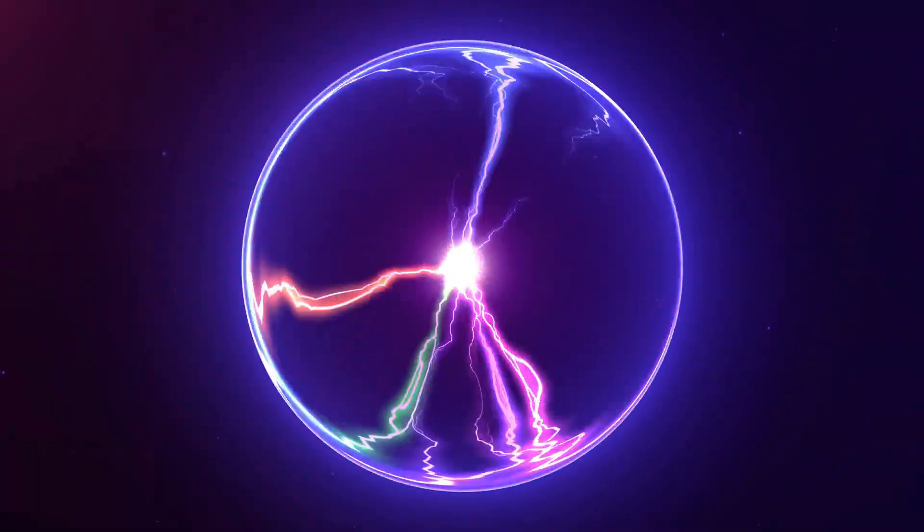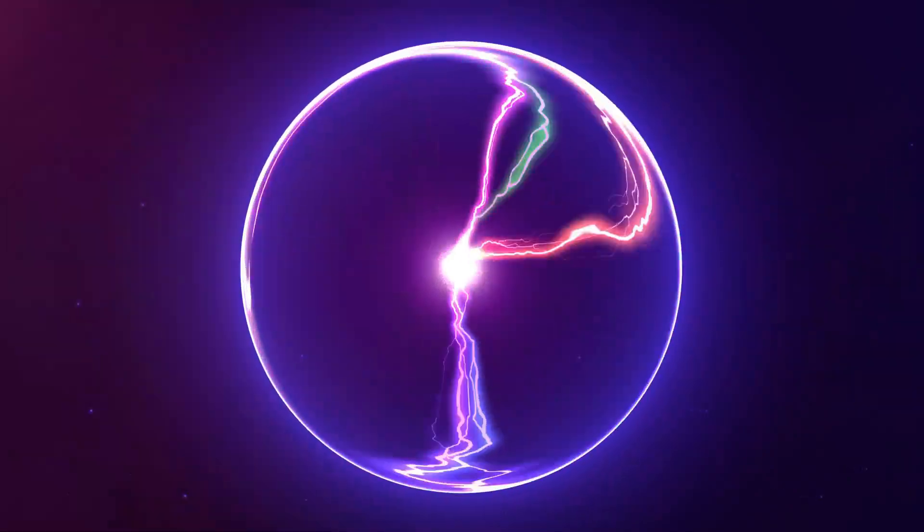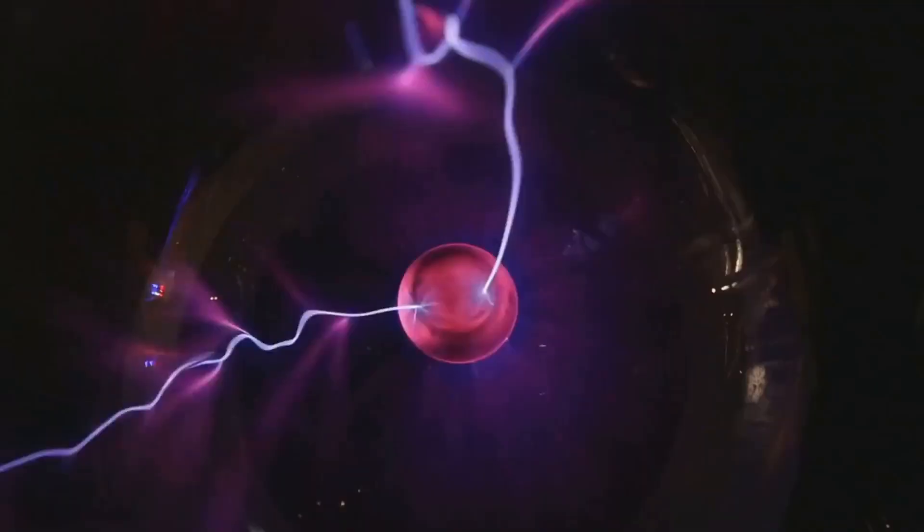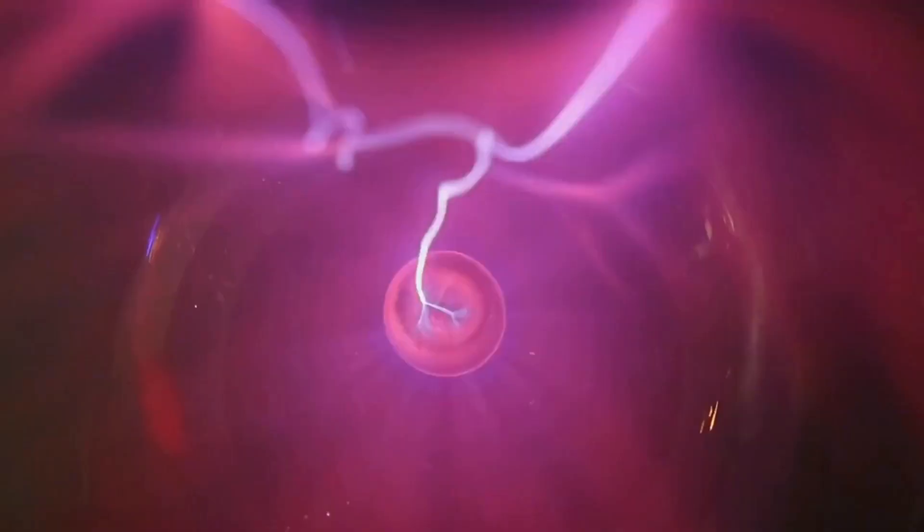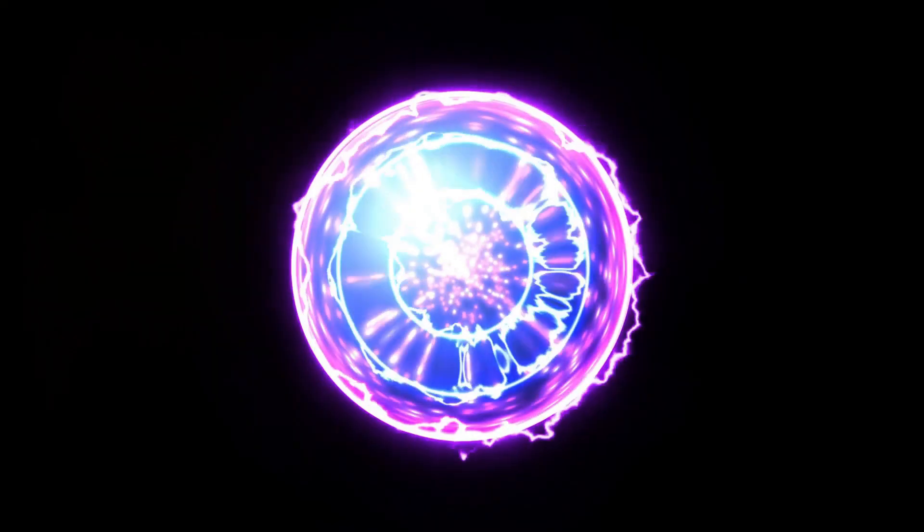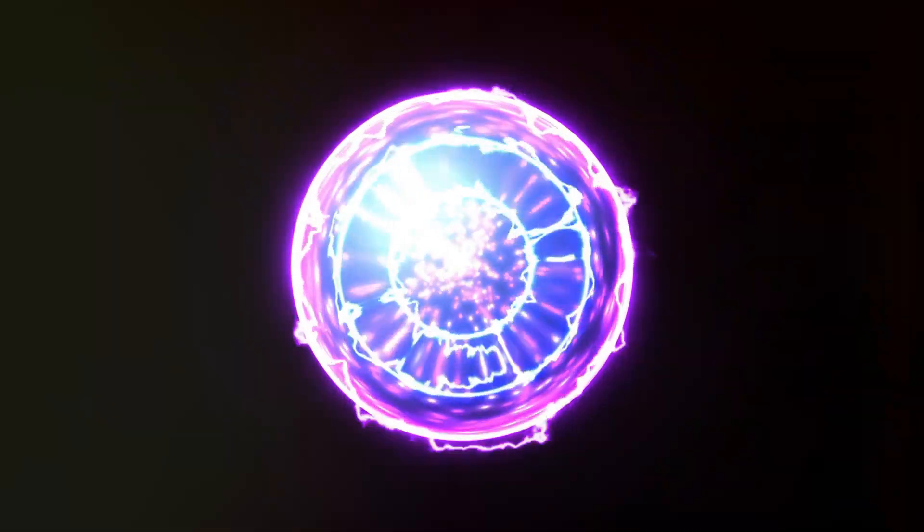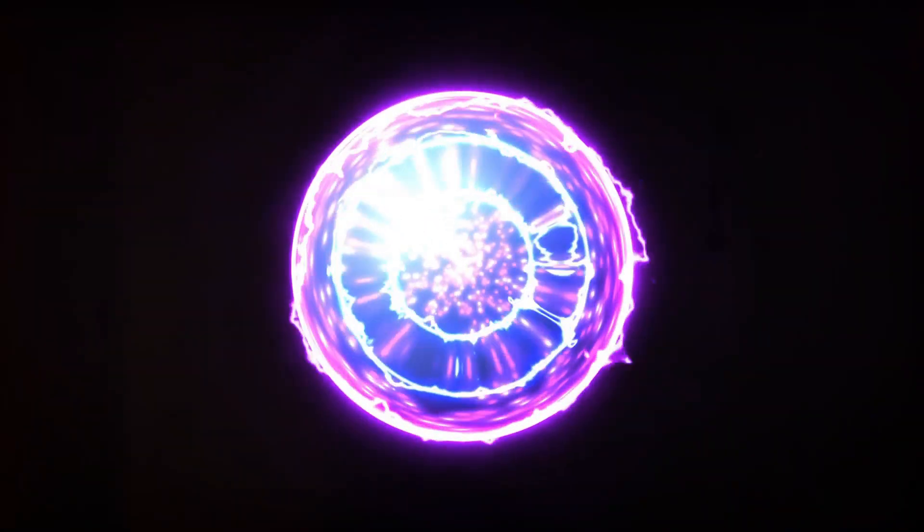Plasma is often referred to as the fourth state of matter, distinct from solids, liquids, and gases. So hot that the electrons break free from the atoms, creating a glowing, electrically charged gas. This ionized gas emits light and heat, giving plasma its unique properties.